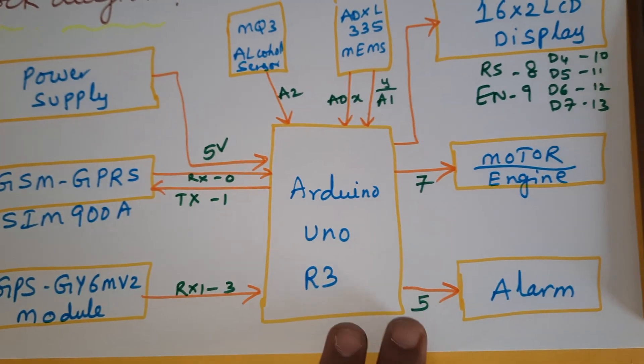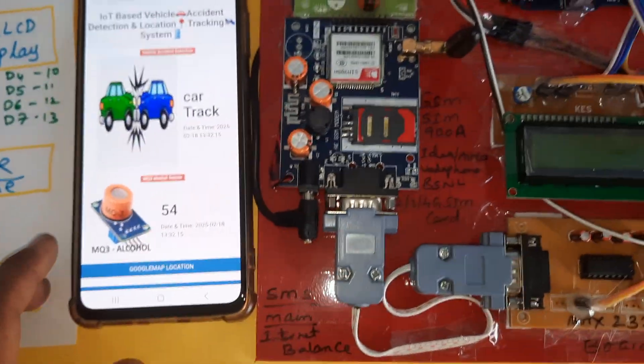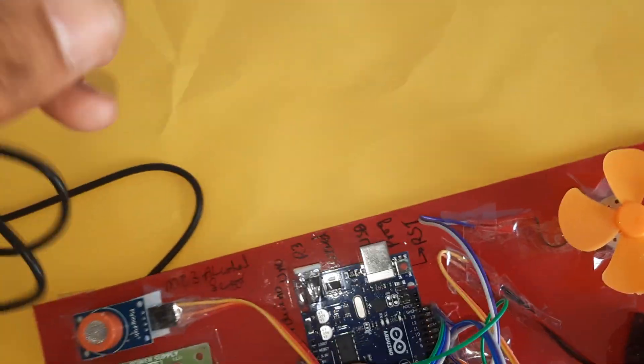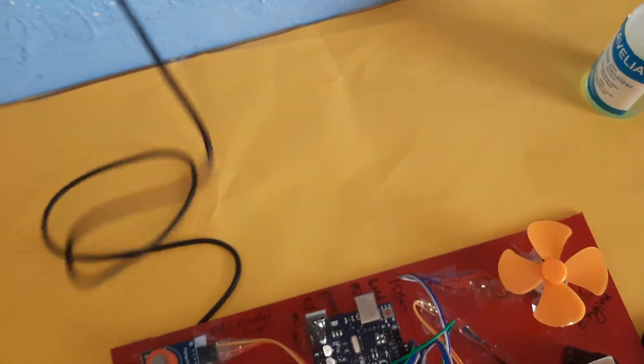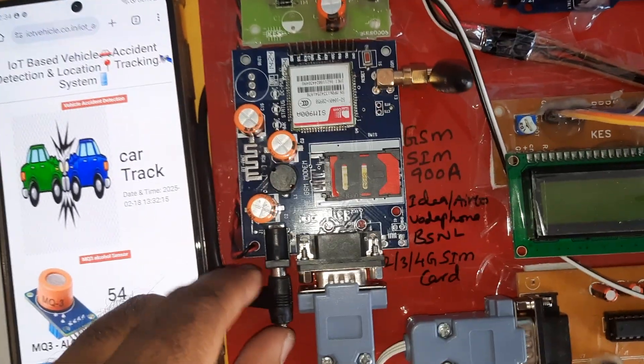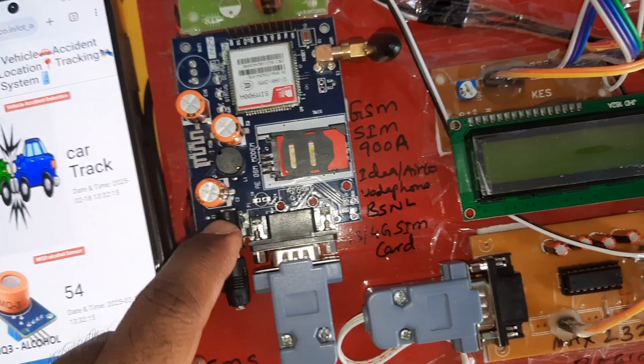This is the web page and the SMS alert. We are using a 0 to 9 volts adapter as the power source. That adapter power source is given to the GSM GPRS modem SIM 900A.